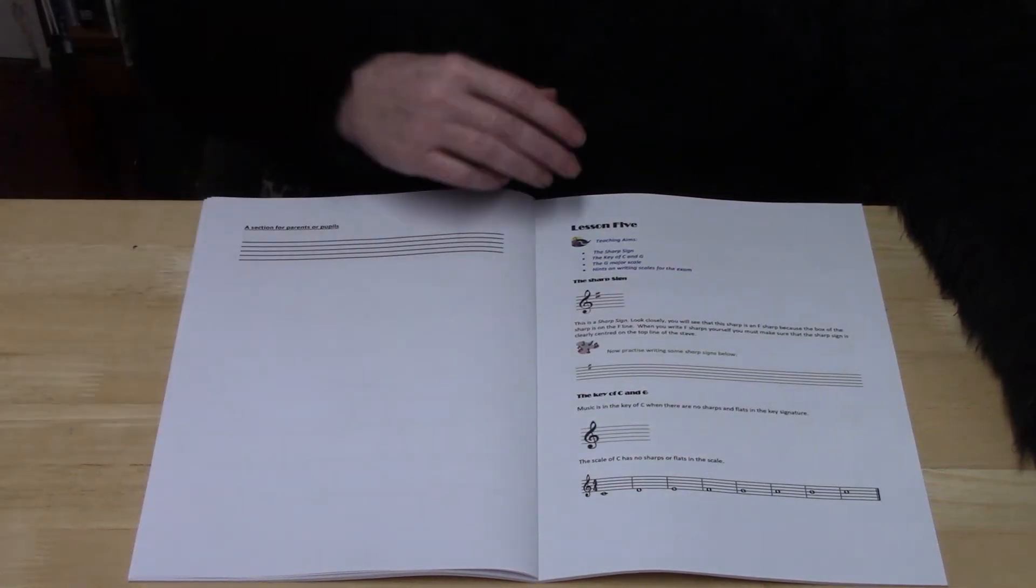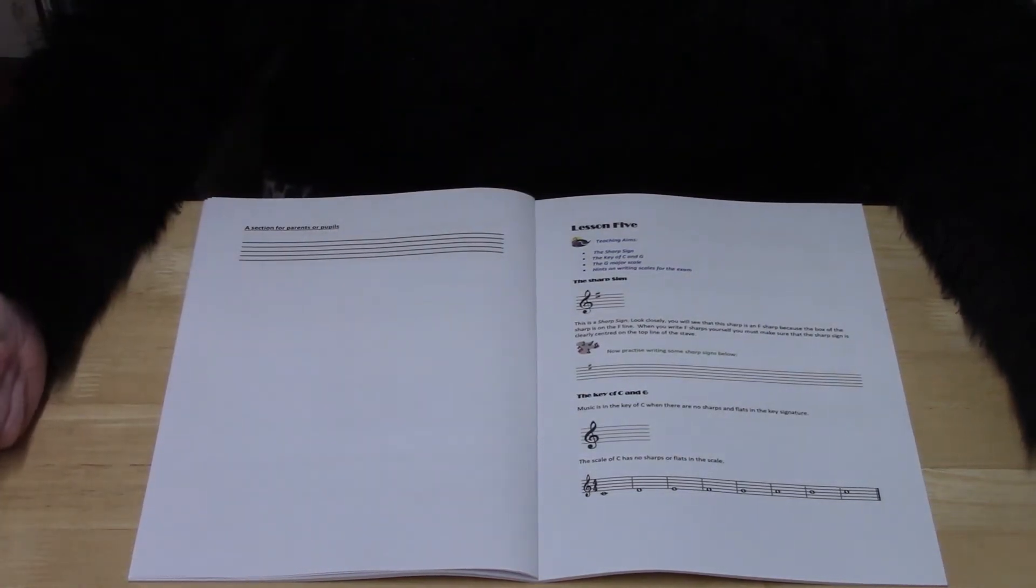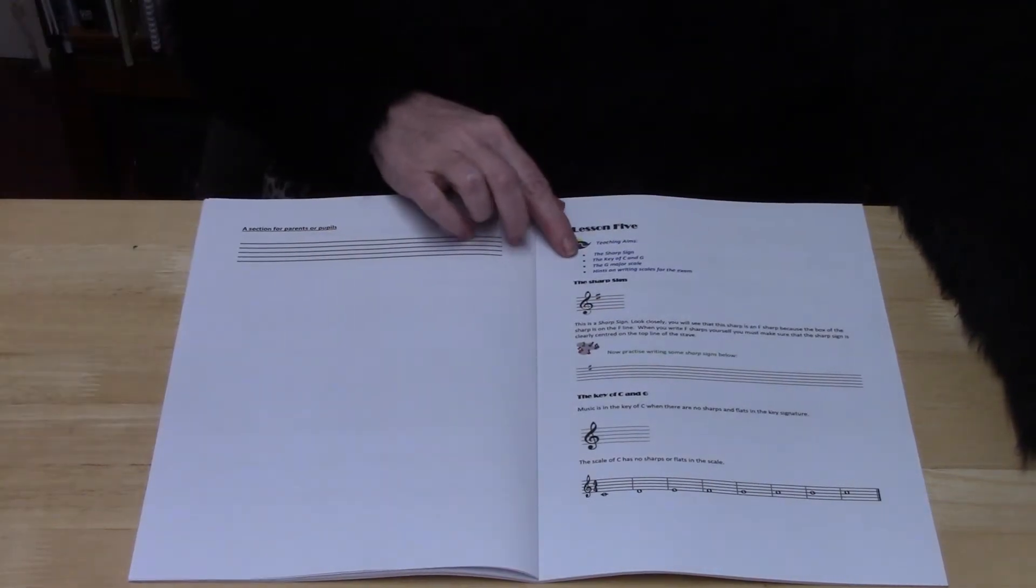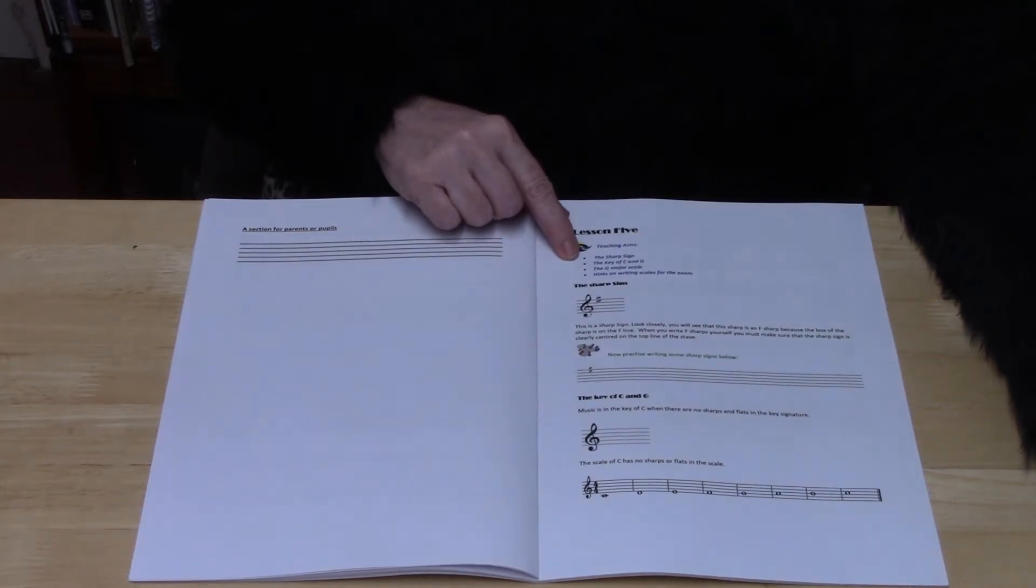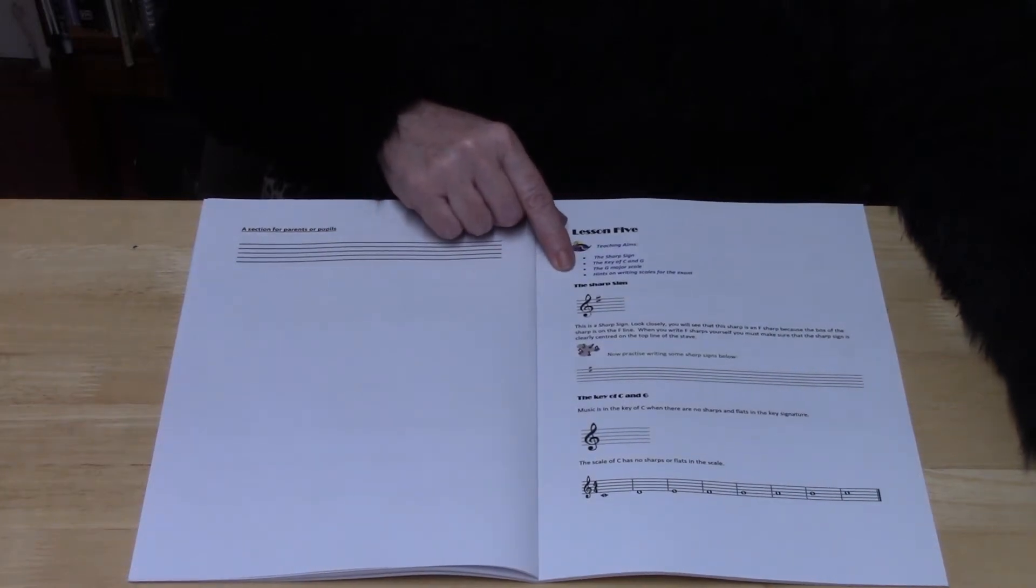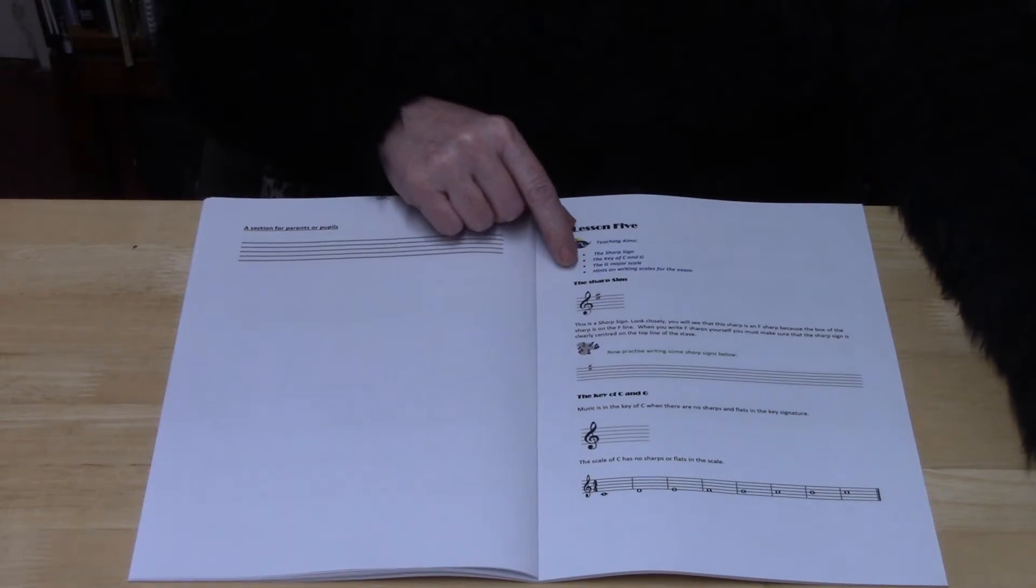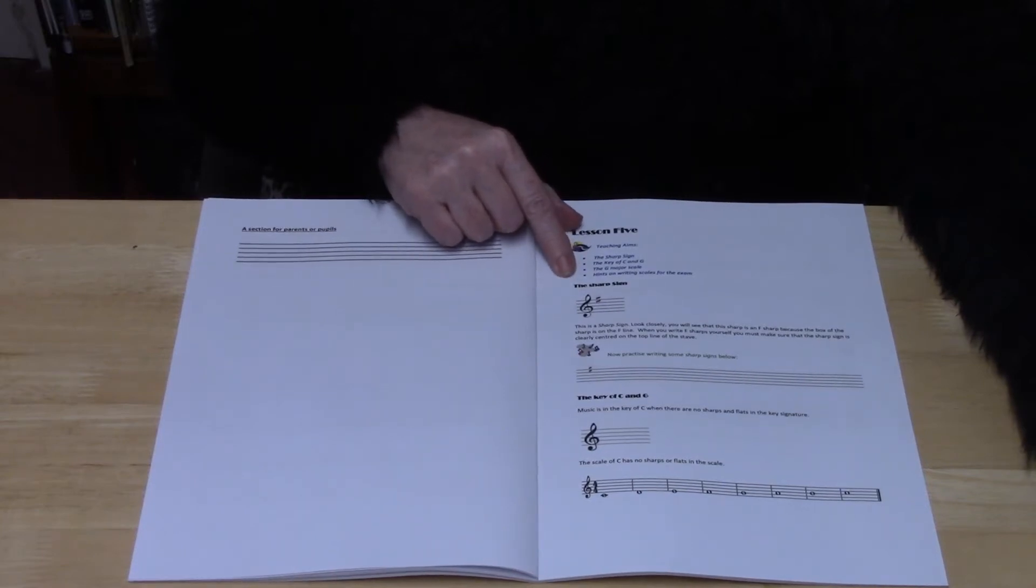Hello and welcome to Lesson 5 of the First Steps Theory Frenzy Tutor Book. In this lesson you will learn about the sharp sign, the key of C major and G major, the G major scale, and then you'll be going over some hints on how to write scales correctly for the exam.